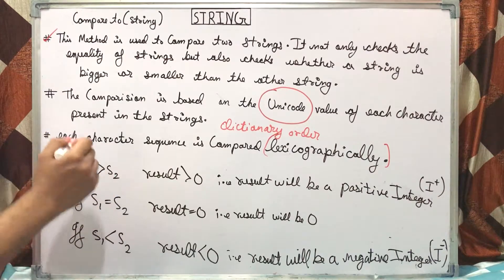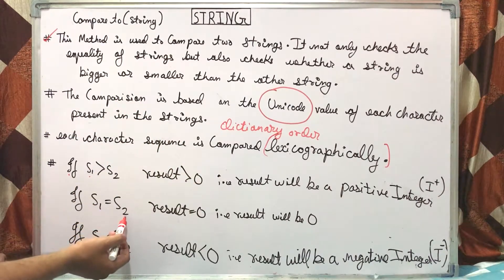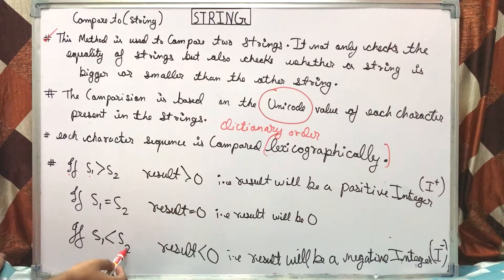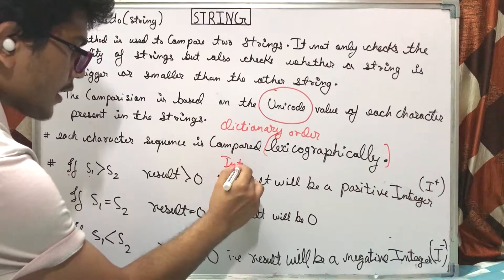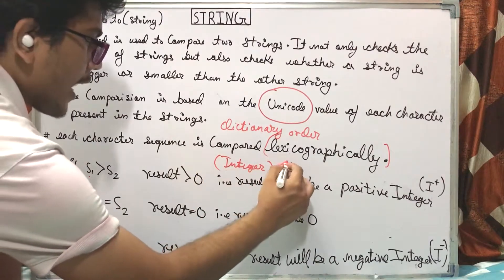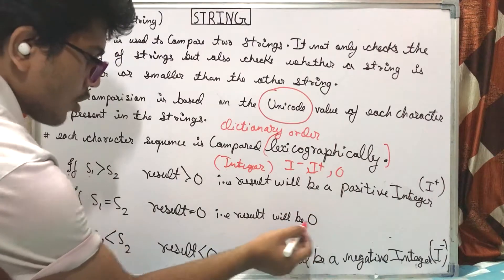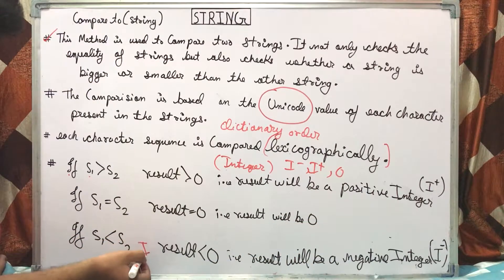If S1 is greater than S2, then the result is greater than 0. If S1 is equal to S2, then the result is equal to 0. If S1 is less than S2, then the result is less than 0. The result is an integer — either positive, negative, or zero.